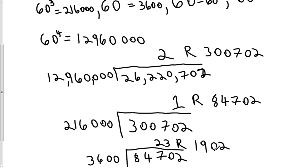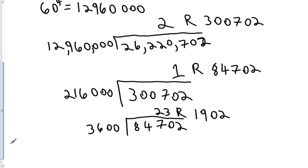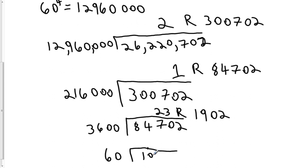So we're going to continue in this fashion — we're going to divide this remainder 1,902 by the next place value down from the 3600 place, which is the 60s place. So we're going to see how many times 60 goes into 1,902. This turns out to be 31 times, with a remainder of 42.